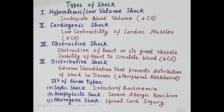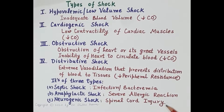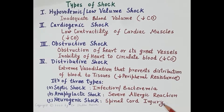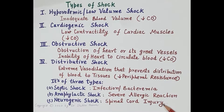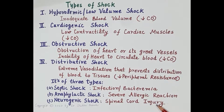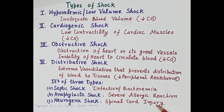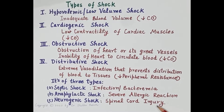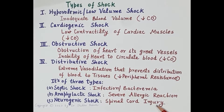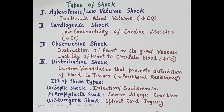The third type of distributive shock is neurogenic shock. Neurogenic shock occurs due to spinal injury — injury to the spinal cord — which leads to loss of sympathetic vascular tone. There is excessive vagal tone, which leads to vasodilation and subsequently poor circulation of blood to tissues. All three types of distributive shock and their management are covered in detail in the third video, Shock Part 3.